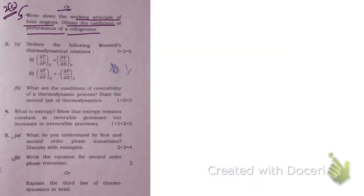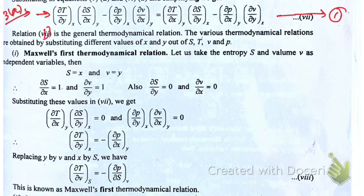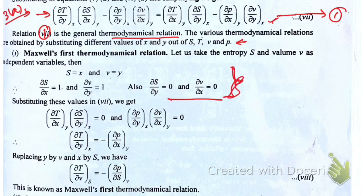In question number 3 we need to show two thermodynamic relations. This is the answer to question 3a. You start with the general thermodynamical relation — let's call this equation number one — and the meanings of the symbols are given here.